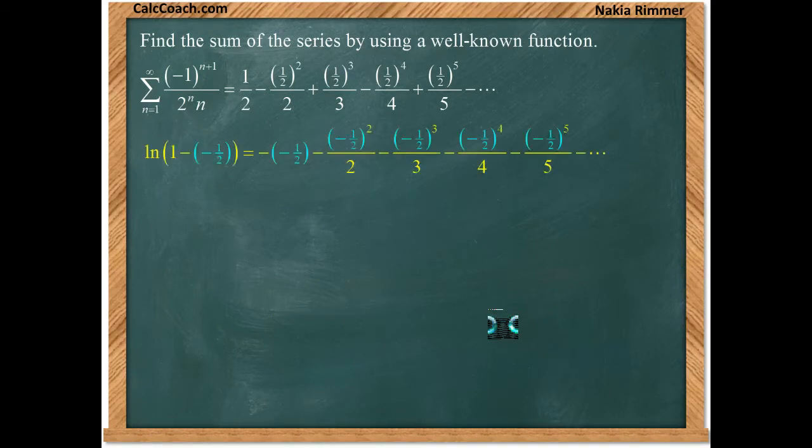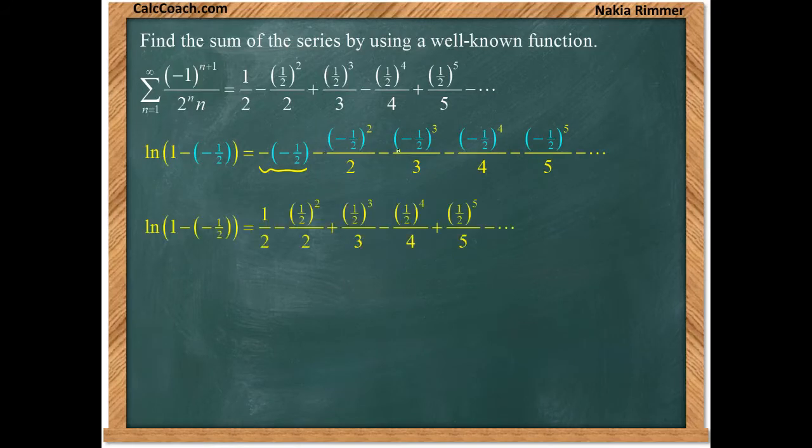Here's where we're at. And these guys combine to give you a half. Then you have minus a half squared over two plus a half cubed over three. All the odd terms are positive, and the even terms are negative. That is exactly the series that we have.